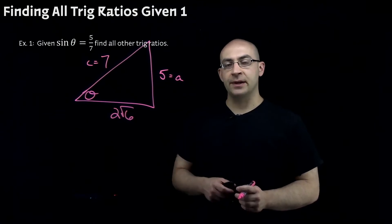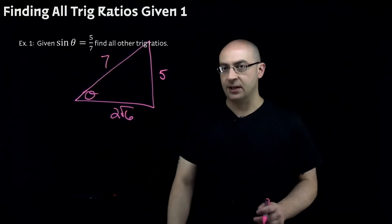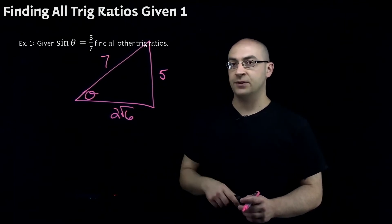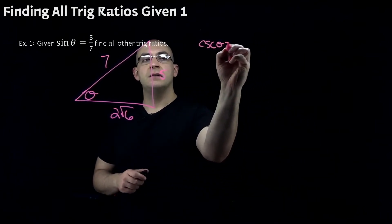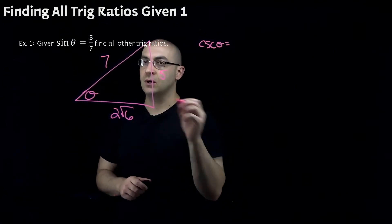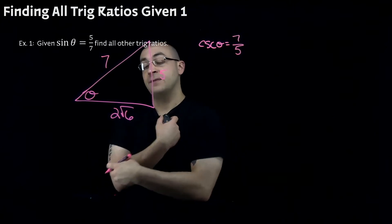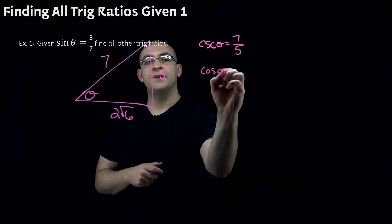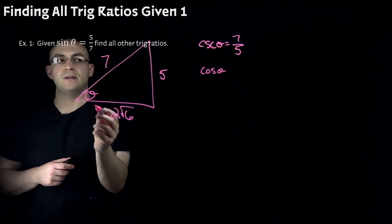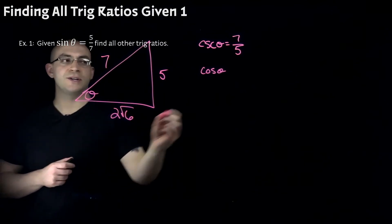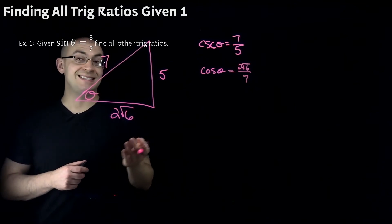Now that I have all three sides of my right triangle I can start filling in the rest of the trig ratios. We knew that sine of theta was five over seven. Sine's inverse is cosecant, so cosecant of theta is hypotenuse over opposite — seven over five. Now let's find cosine: cosine of theta is adjacent over hypotenuse, so the adjacent side is two root six and the hypotenuse is seven, giving us two root six over seven. Cosine's inverse is secant, found by just flipping that fraction over.